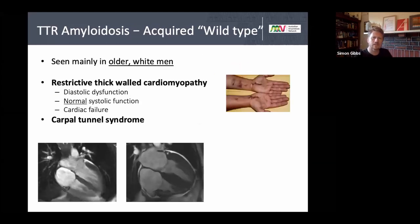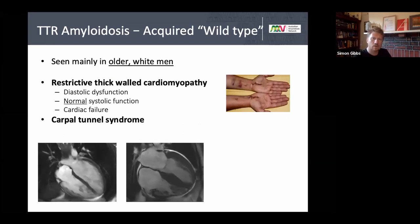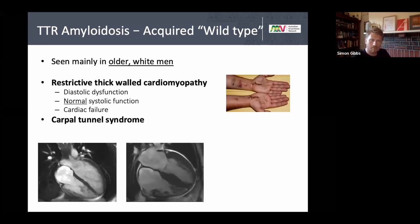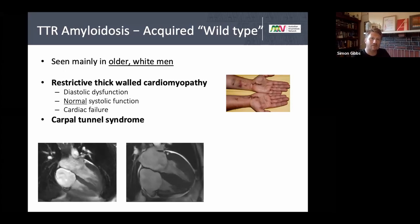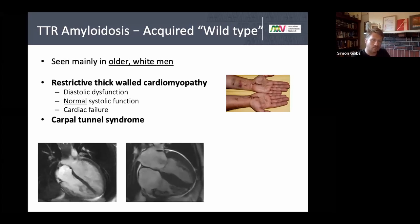Transthyretin amyloidosis can be acquired or wild type — this used to be called senile systemic amyloidosis, but patients much preferred to be called wild type. The majority of patients will have wild type disease, which can't be distinguished from hereditary without genotyping. About 90% of cases are wild type or acquired.